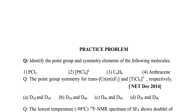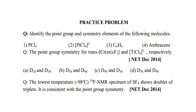I am giving you some problems based on the point groups discussed. First question: identify the point group and symmetry elements of the following molecules. (1) PCl5 — can you draw its structure? (2) PtCl4²⁻ — a square planar complex; draw it and identify its symmetry elements. (3) C6H6 (benzene). (4) Anthracene. Please draw the correct structures, identify the symmetry elements, and write down the point group of each molecule.